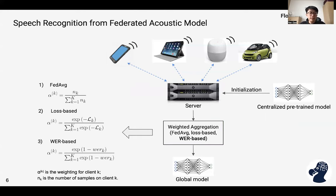Here, W_k represents the weight for client k. The first is standard FedAverage, which uses the number of samples as weight. The second, the loss-based method, uses the negative average training loss applied to a softmax function as weight. The third is the WER-based method, which uses (y minus y-bar) applied to a softmax function as weight.